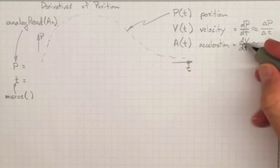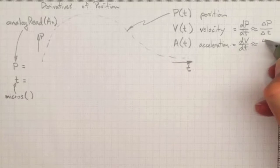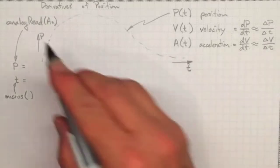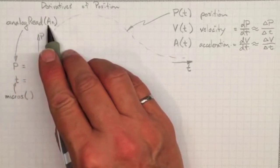This derivative will be approximately the amount that the velocity changes by and the time that the velocity took to change. And those we can estimate based on measurements. So suppose we're making analog readings of position from a potentiometer or some other measurement device.